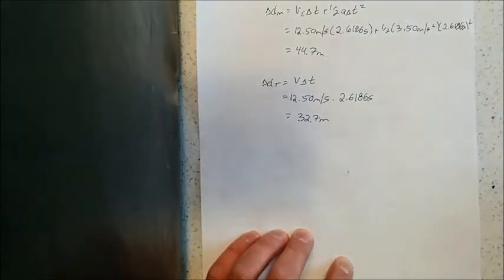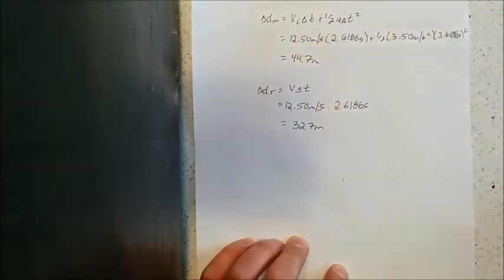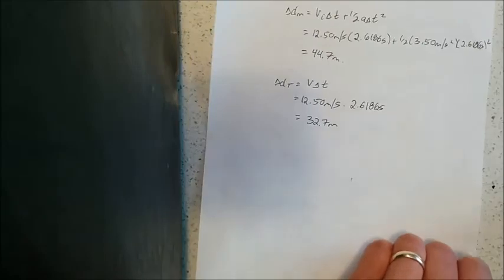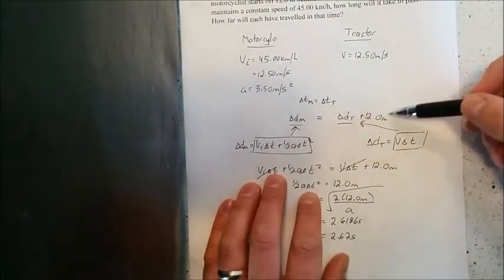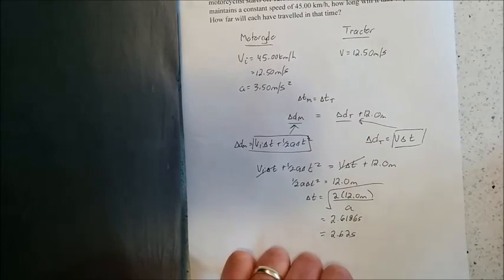So again, I hoped that these two would be 12 meters apart. I take a look. They are 12 meters apart, which confirms what we had worked with in the initial part of the problem, stating that the distance of the motorcycle and the distance of the tractor were 12 meters apart. So everything works out really nice.